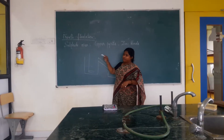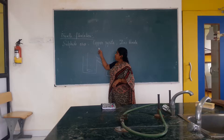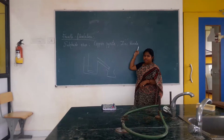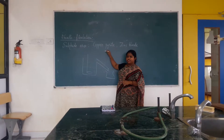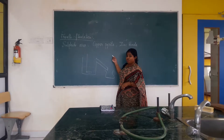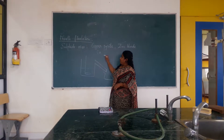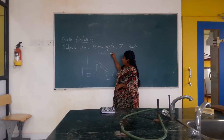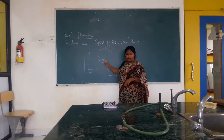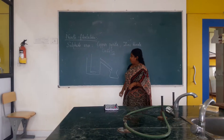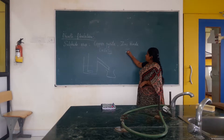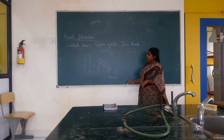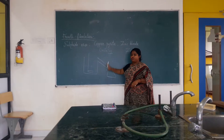Sulphide ores are, for example, copper pyrite and zinc blende. Copper pyrite contains Cu, Fe, S2 — so sulphur is present in copper pyrite. And zinc blende is zinc sulphide, ZnS. So this method can only be used for sulphide ores.